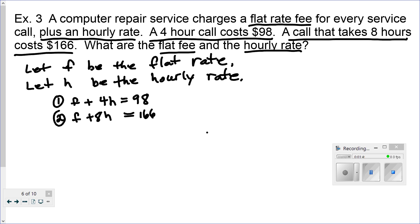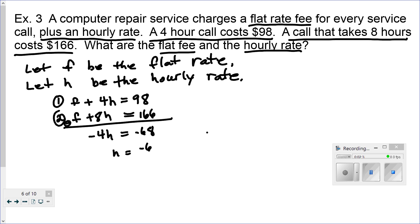We have a candidate that allows us to do elimination right away, since the coefficient on the F's is both 1. So, subtracting, we end up with 4H equals 68. Dividing both sides by negative 4, we get the hourly rate to be $17 per hour.